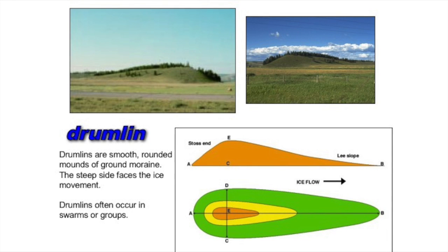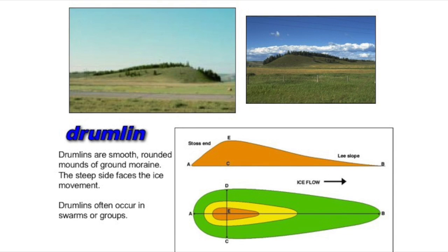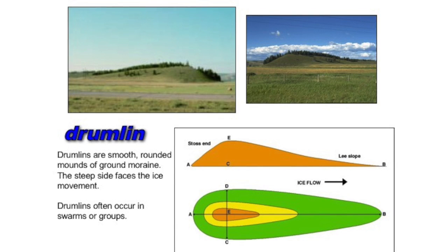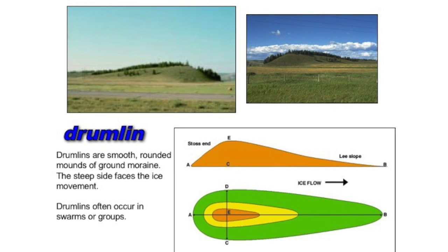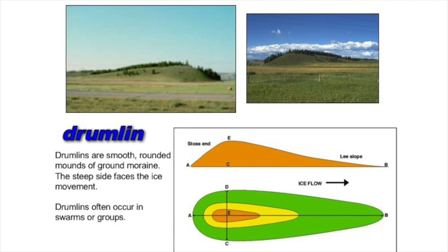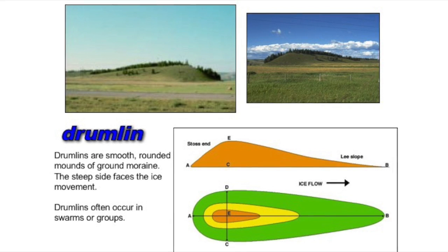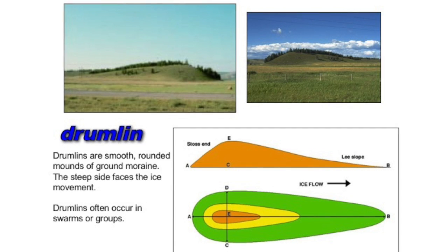Drumlins are a feature of glacial deposition that are formed from glacial till or boulder clay, which we've looked at previously. They're very long features, commonly about a kilometer in length, and they can be about 500 meters in width and about 50 meters in height, so they're pretty big features.